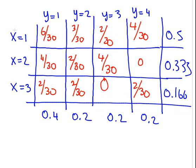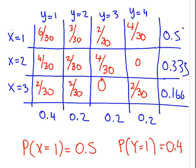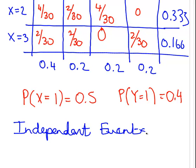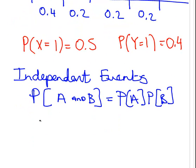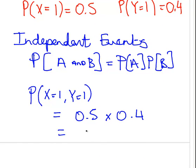I've drawn out the table again with the marginal distributions — the marginal probabilities. The probability of X equal to 1 is 0.5, and the probability of Y equal to 1 is 0.4. The idea of independent events is that the probability of A and B equals the probability of A times the probability of B. So if X and Y are independent, the probability of X=1 and Y=1 should be 0.5 times 0.4, which is 0.2.